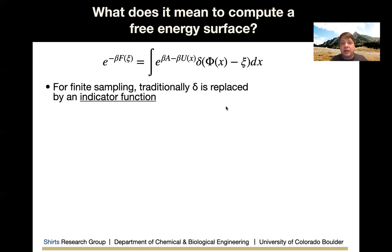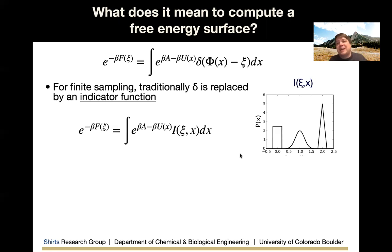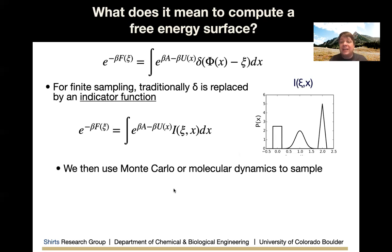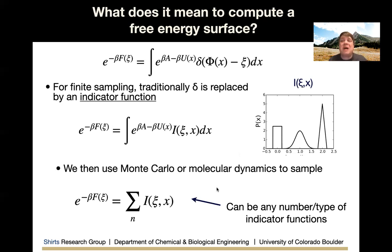For finite sampling, we never exactly visit any value of xi. So we replace the delta function with some sort of indicator function — it could be a bin, a Gaussian, a triangle, really anything. It expresses an approximation that locally around our value of the collective variable, we observed something there, so we should count it as having the right collective variable. We use Monte Carlo or molecular dynamics to sample configuration space with the Boltzmann distribution, and the exponential of the free energy surface is simply the sum of all the indicator functions.